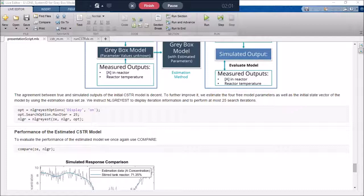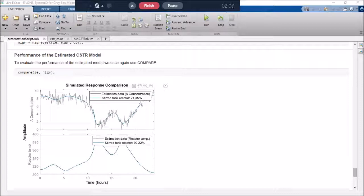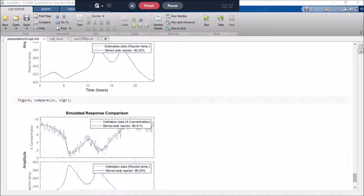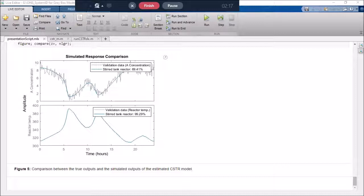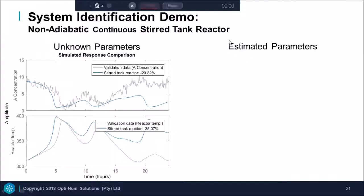we use the non-linear grey estimation function. Comparing our estimation subset and our model, we can see that it fits very well. And the validation subset also corresponds to our model.